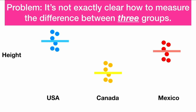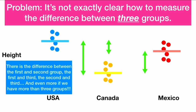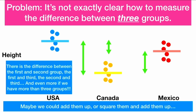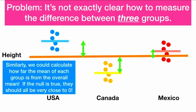Here are the means of these three groups. We see that the U.S. is taller than Mexico, which is taller than Canada. So we can measure the difference between the first and second group, the first and third group, the second and third group — but there are a lot of differences, and if we had more than three groups there would be lots of pairwise differences. We could also calculate how far each of the means is from the overall mean, sometimes called the grand mean. Here in orange we have the mean of all three groups, and we can see the green arrows showing how different each group is from the overall mean.